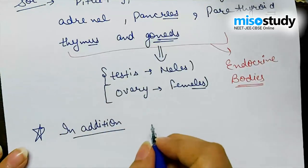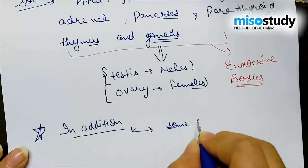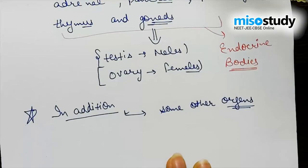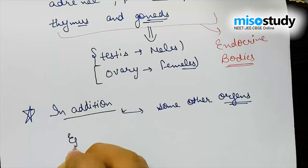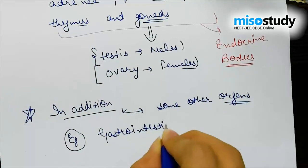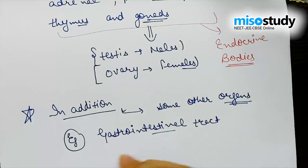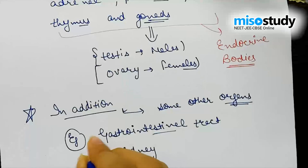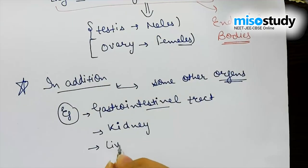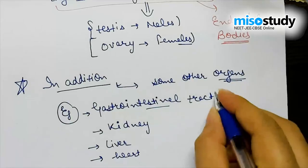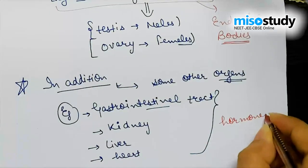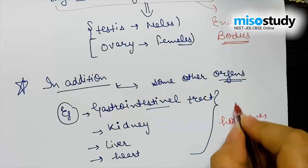In addition to these endocrine bodies, some other organs such as the gastrointestinal tract, kidney, liver, and heart are apart from the main endocrine bodies, yet they also produce some hormones.